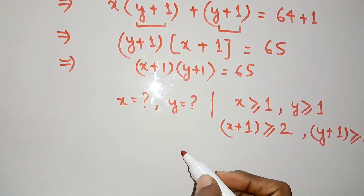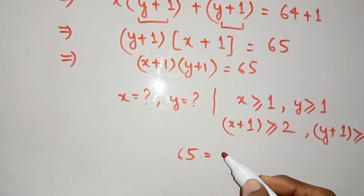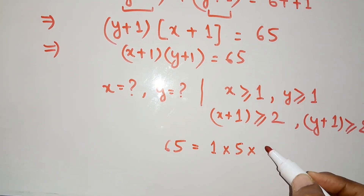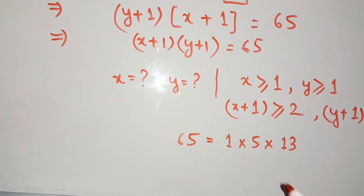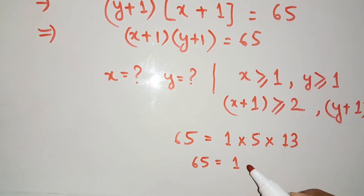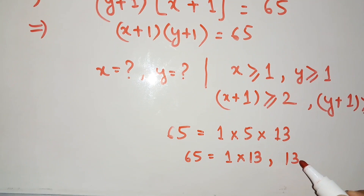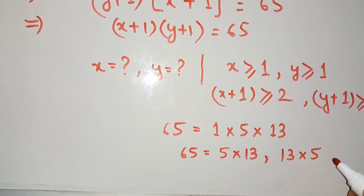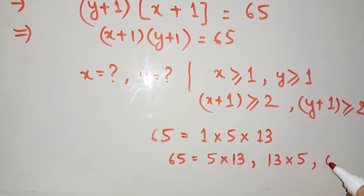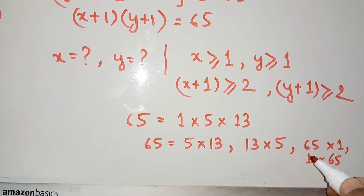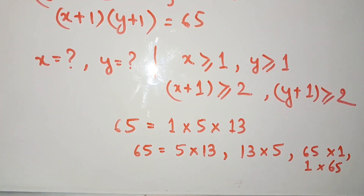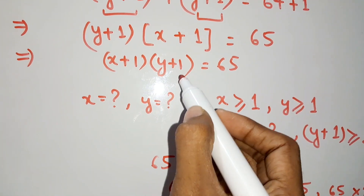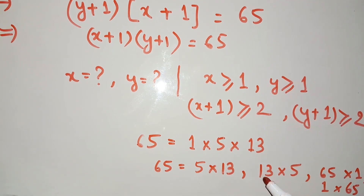Now we can factorize 65. The prime factorization of 65 is 1 times 5 times 13. So 65 can be written as: 1 times 65, 5 times 13, 13 times 5, or 65 times 1. These four factor pair options are the only ones available. Since (x plus 1)(y plus 1) equals 65, both factors must be one of these pairs.